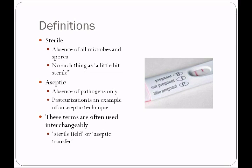These terms are often used interchangeably. For example, the sterile field in the operating room is not really a sterile field. It really should be called an aseptic field because pathogens hopefully will be removed. But every step is taken to ensure that bacteria are not in this area, but still bacteria could be in a sterile field.